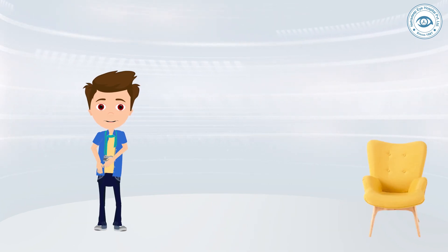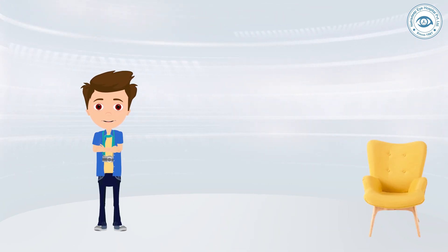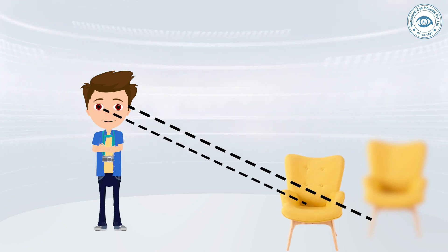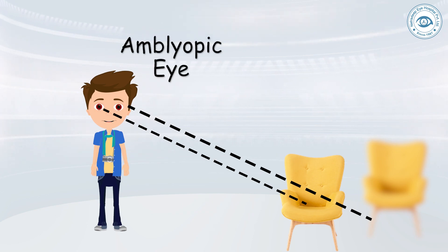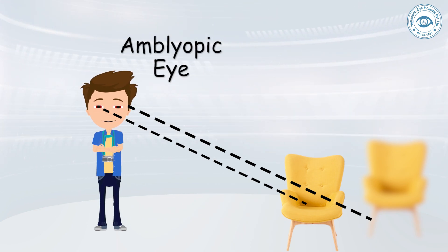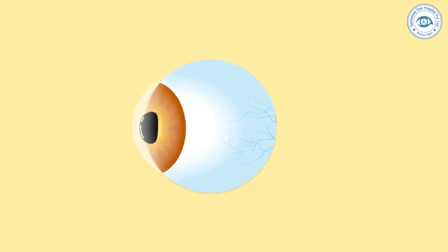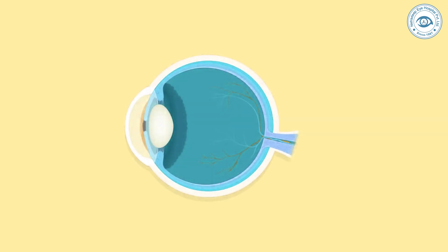When the child has amblyopia in one eye, the brain tries to get input from the other — the healthy eye — and hence the input from the amblyopic eye is reduced, which leads to weaker vision in the amblyopic eye. If the eye is not stimulated properly, the nerve cells responsible for vision are not matured properly.